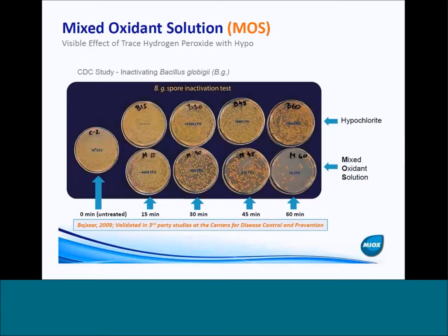This is another example of enhanced biological efficacy with mixed oxidant solution. This is actually a study that was replicated by the Center for Disease Control. These are Bacillus Globigi spores, and the reason we choose these is they're really hard to inactivate — one of those microorganisms that is quite difficult to inactivate but easy to culture. What you can see is for different contact times — 15 minutes, 30 minutes, 45 minutes, and 60 minutes — for hypochlorite versus mixed oxidant solution, you get dramatically different inactivation results.